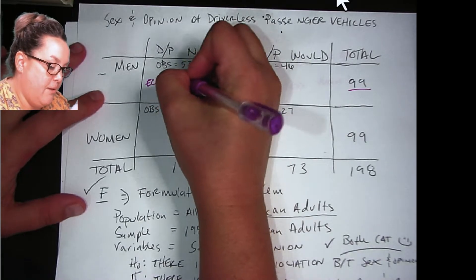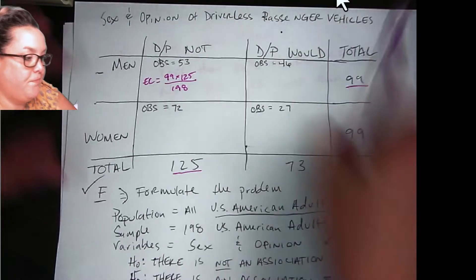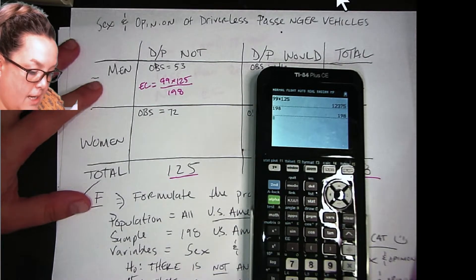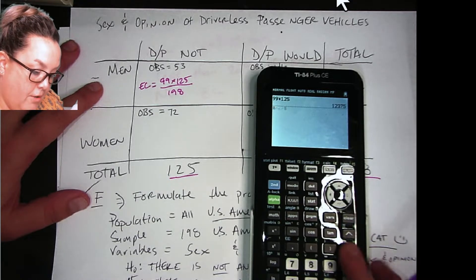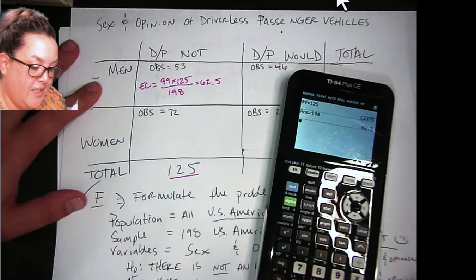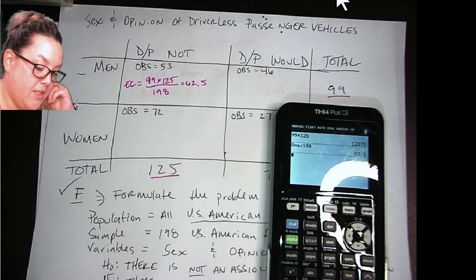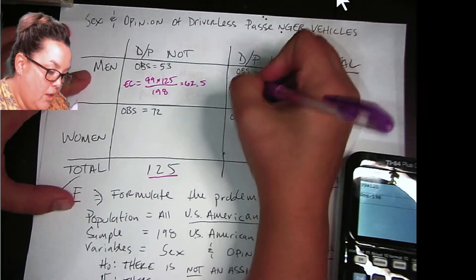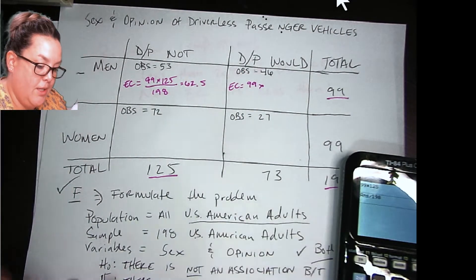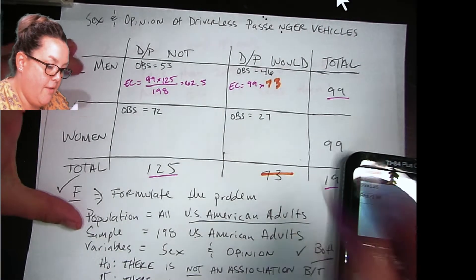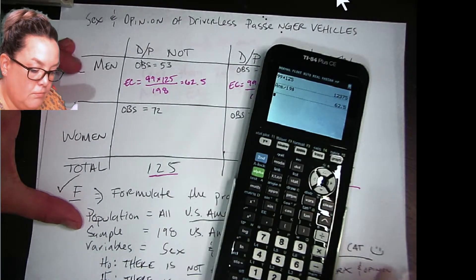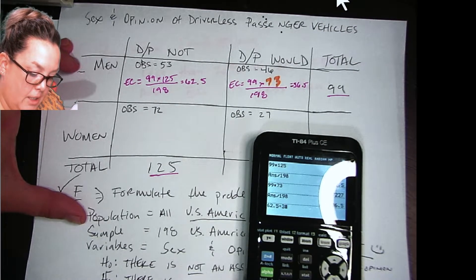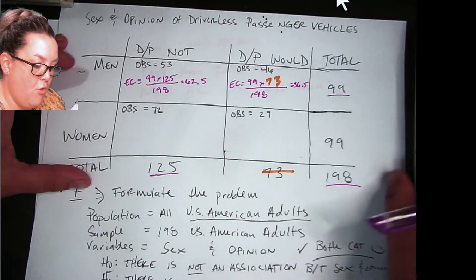Now remember when you calculate an expected count, it's the row total times the column total divided by the grand total. So 99 times 125 divided by 198. And remember that observed counts have to be whole numbers because they're counting how many individuals fall into that group. Whereas the expected counts, because it's coming from a calculation, you would not expect it to be a whole number. So next to do this expected count, we're going to do 99. That's the row total, but this time we have 73. And so 99 times 73, and then we still have that 198. So this comes out to be 36.5. And to check your work, you need to make sure that these two add up to 99, which they do. So we're good there.